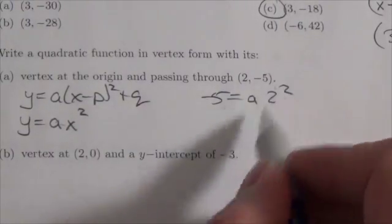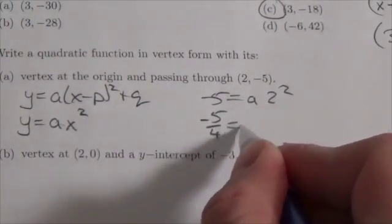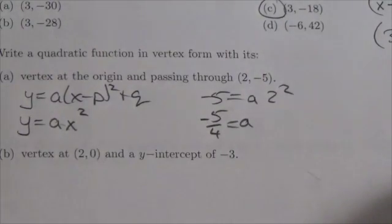2² is 4, and when I divide I get -5/4 equals a. Now that is not the final answer.